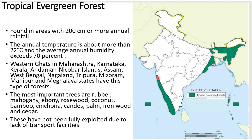These tropical evergreen forests are found in the Western Ghats in Maharashtra, Karnataka, Kerala, Andaman, Nicobar, and in the northeastern states like Assam, West Bengal, Manipur, and Meghalaya. The most important trees are rubber, mahogany, ebony, rosewood, coconut, bamboo, and cinchona.